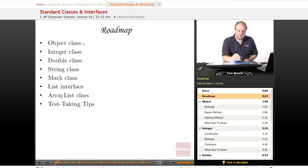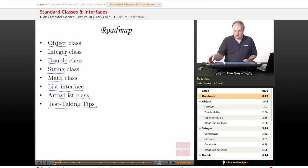So here are the classes and the one interface that you need to know for the AP exam. First of all is the Object class, the Integer and Double Numeric Wrapper classes, the String class, the Math class. Then we come to the List interface and the implementation of the List interface in the ArrayList class. And then finally I'll conclude with some test-taking tips specifically related to these classes and interface and how to be successful in applying these on the AP exam. So let's get started.